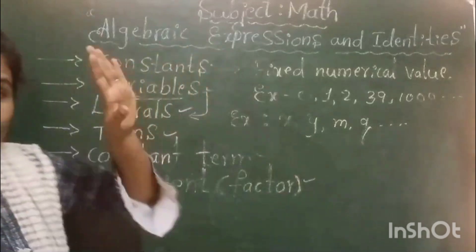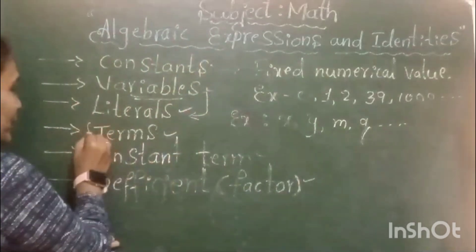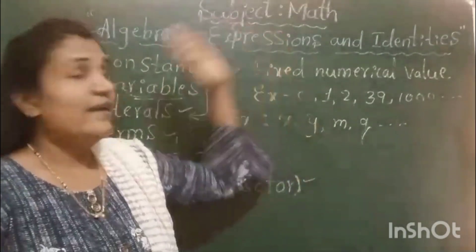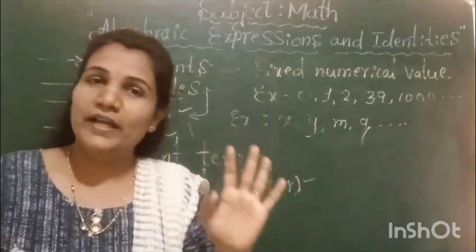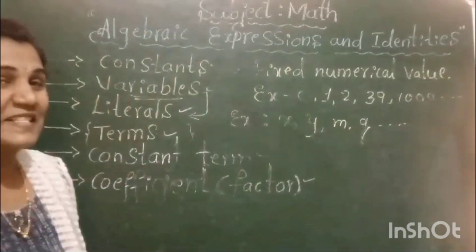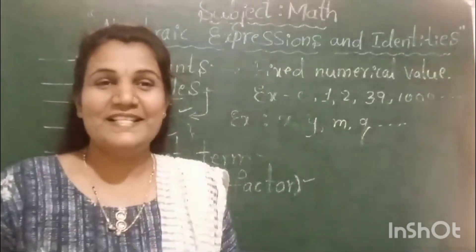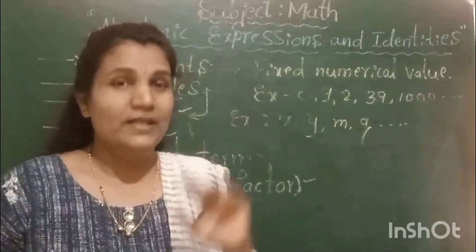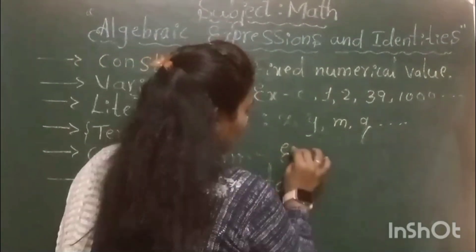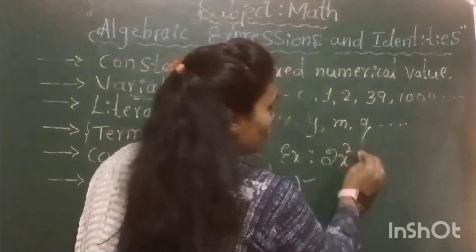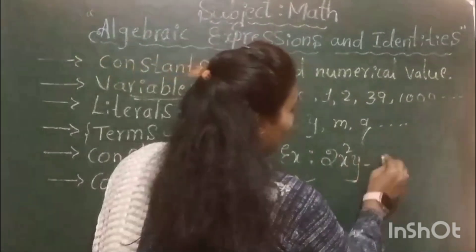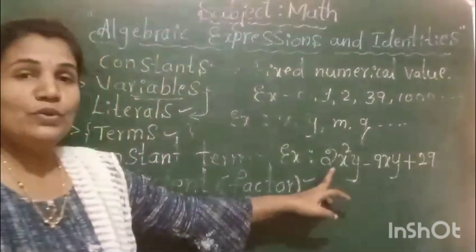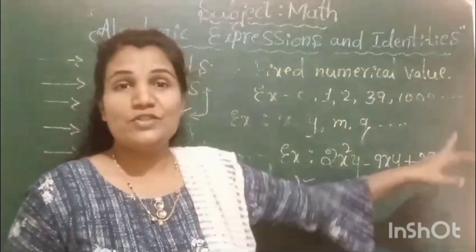I hope these three concepts are clear. Let us move to term. Term is a part of an algebraic expression. Let me take an example for an algebraic expression: 2X²Y − 9XY + 29.